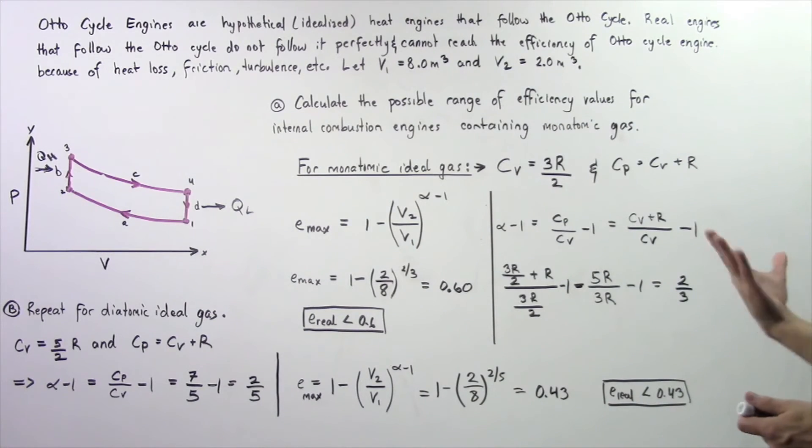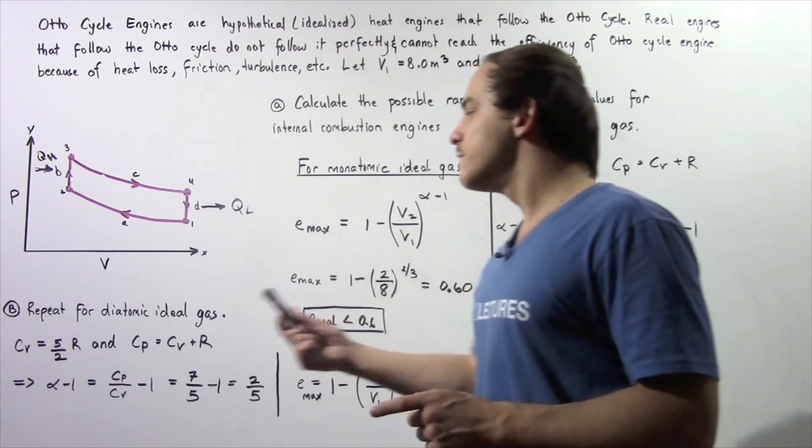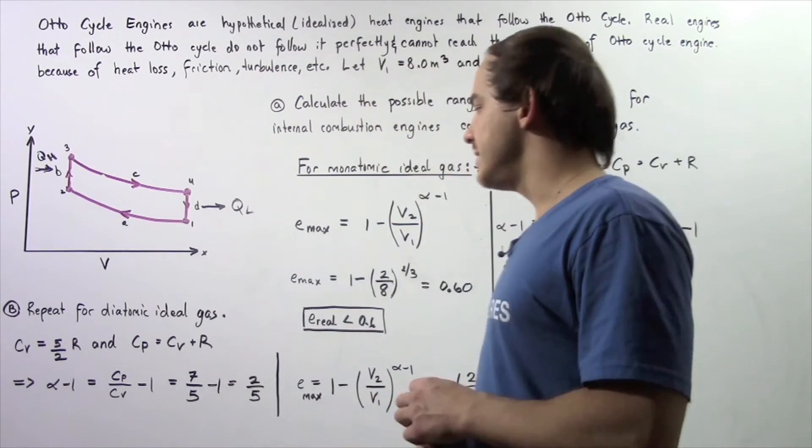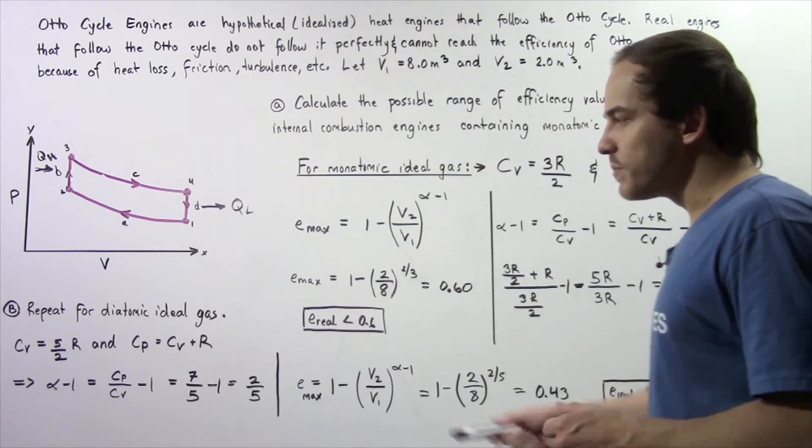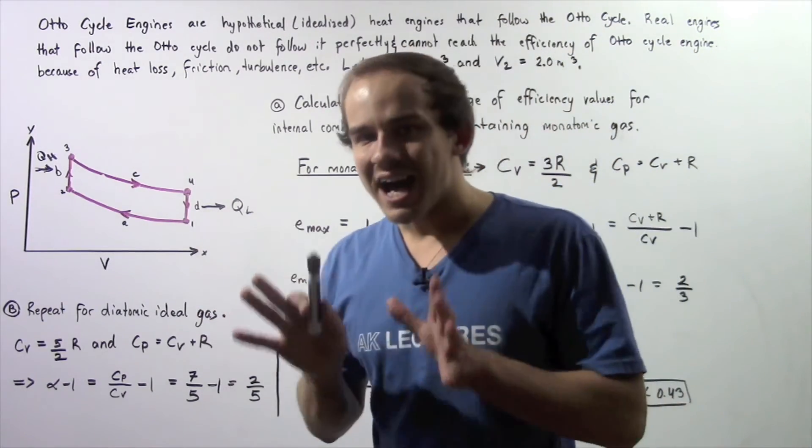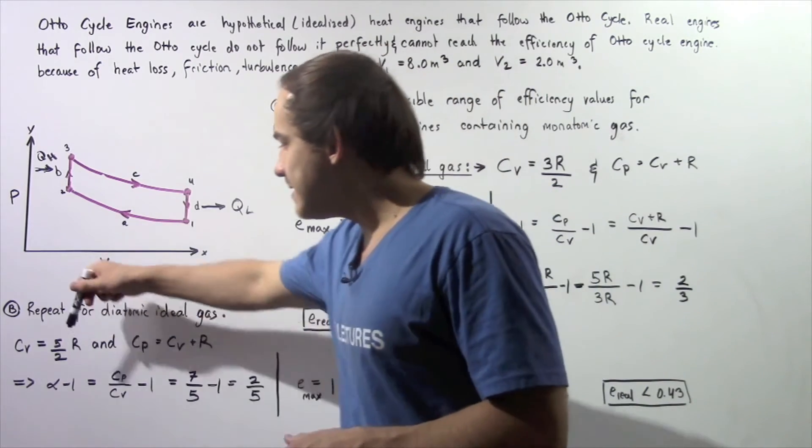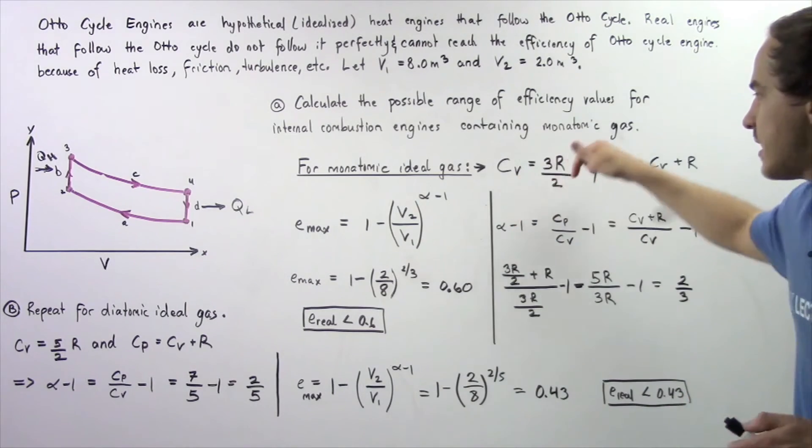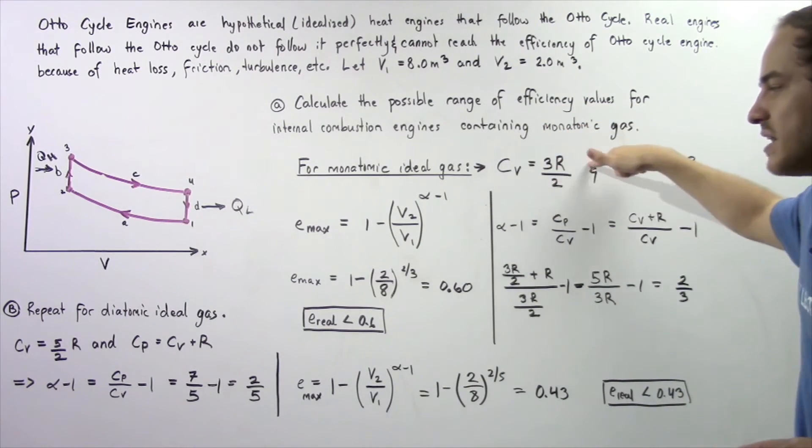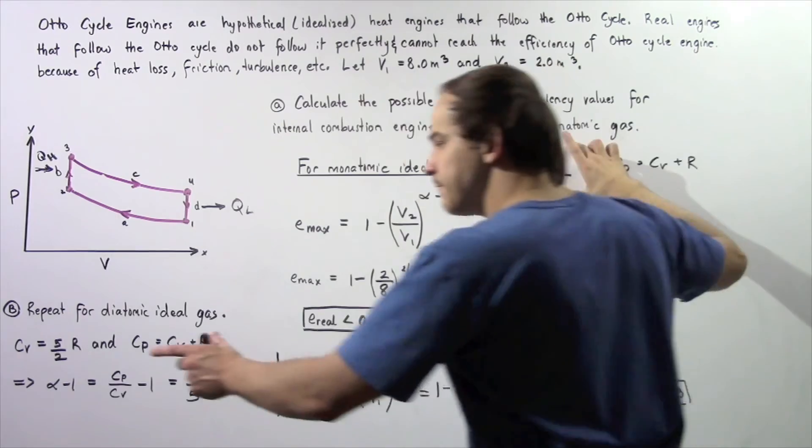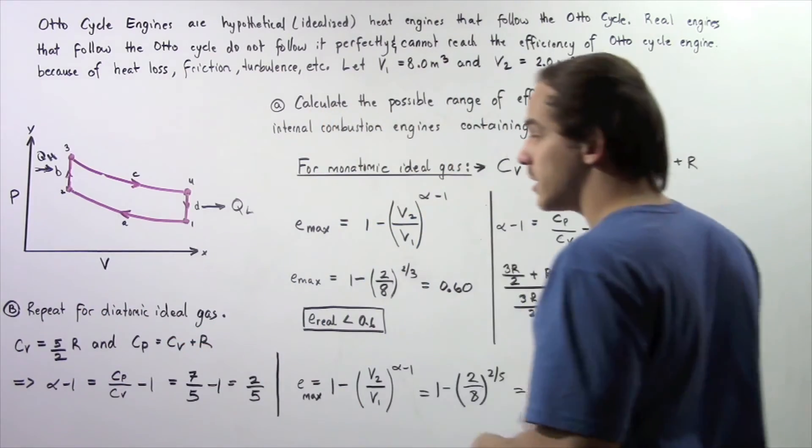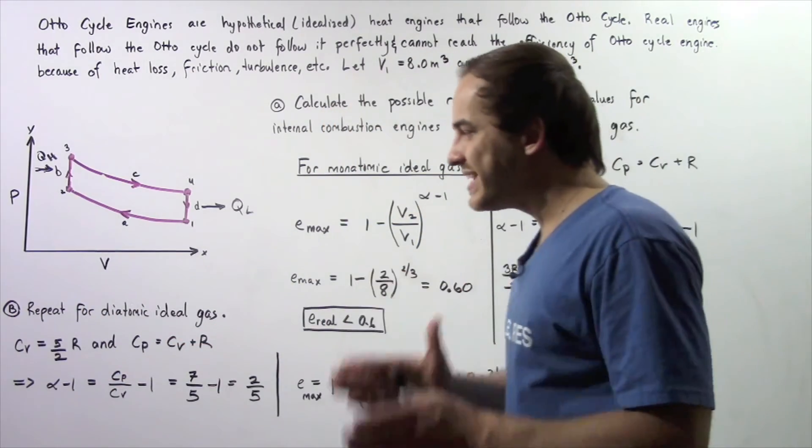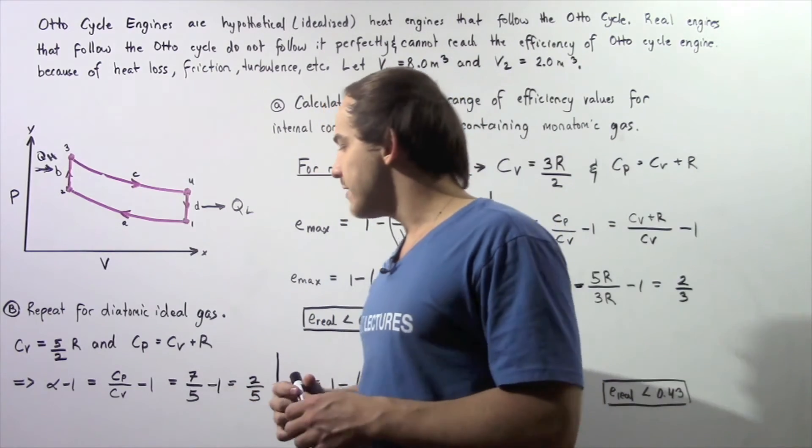In part B we want to repeat the process but now for a diatomic ideal gas. So Cv for a diatomic ideal gas is equal to 5 divided by 2 multiplied by R while in this case we have 3R divided by 2. Now this difference as we spoke of earlier comes from the equal partition principle for energy.